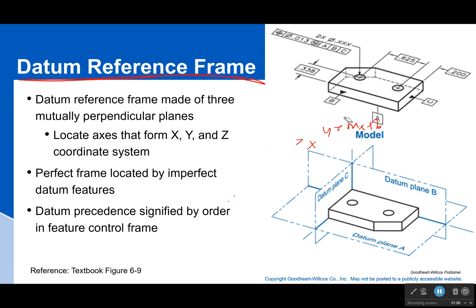So we have this perfect frame of reference. These are always perfect. These things are simulated. They're not real. They're theoretical things and they're perfect. And we locate them by using our imperfect datum features.